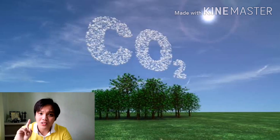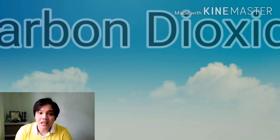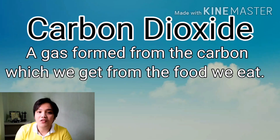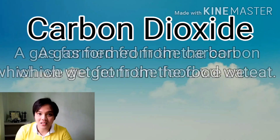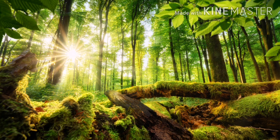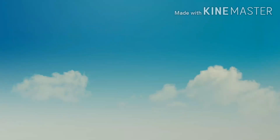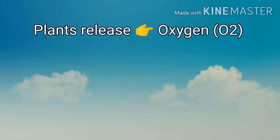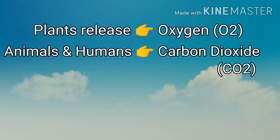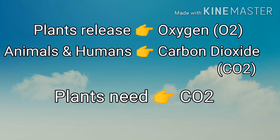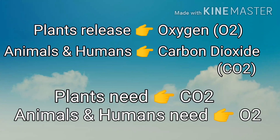On the other hand, Carbon Dioxide, or CO2, is a gas formed from the carbon which we get from the food we eat. Plants breathe carbon dioxide to survive. Plants release oxygen, while animals and humans release carbon dioxide. Plants need carbon dioxide, and animals and humans need oxygen.